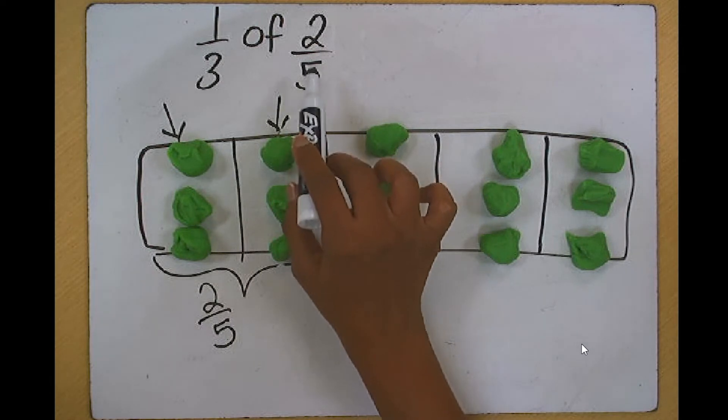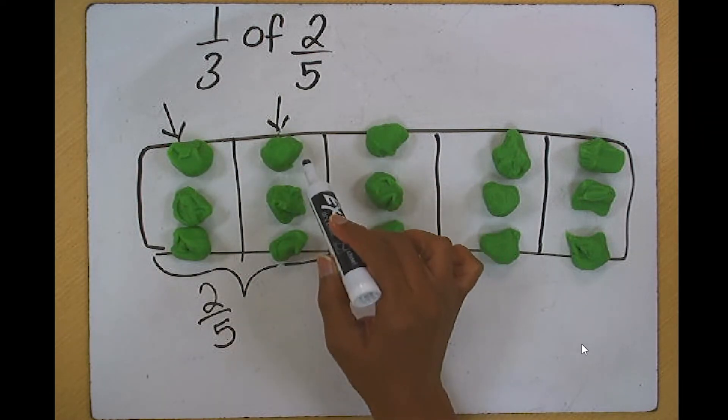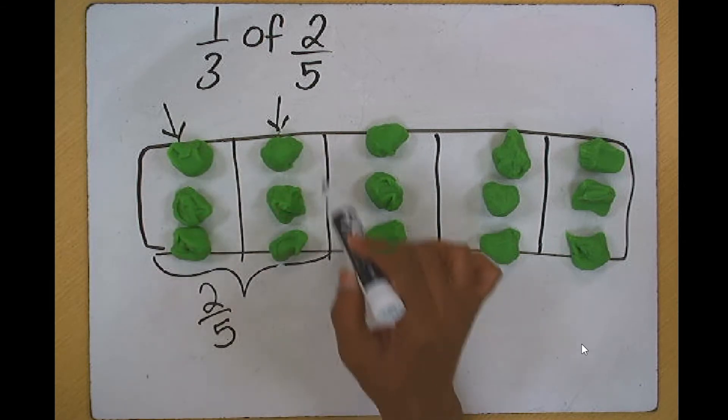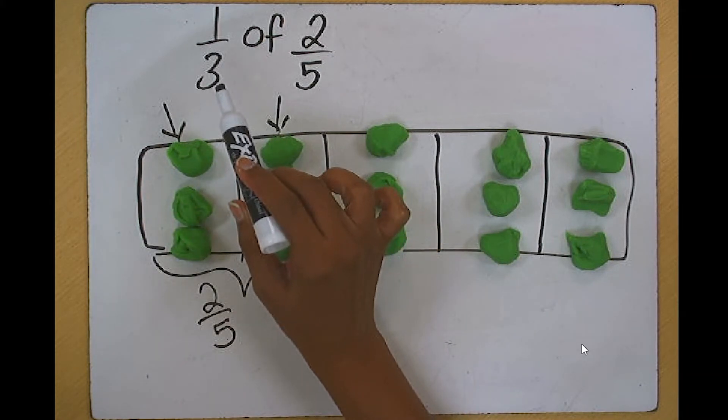Two-fifths. This is one-fifth. This is another one-fifth. So this is our two-fifths. Since we need to find one-third,